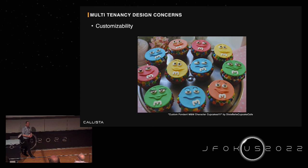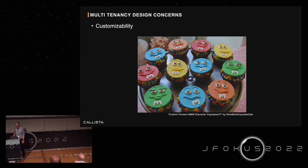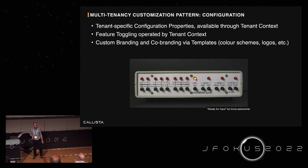Regardless of which way you choose, there are a number of architectural concerns you need to address, and one of them is customizability. If we run every tenant in the same logical software stack, then the only customizability we can offer is what we have designed into the system. We must prepare and design for extension points. There are proven patterns for this: using tenant-specific configuration properties, feature toggling based on tenant preferences, and templating techniques to allow tenants to customize their look and feel.